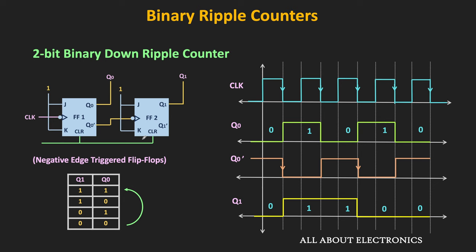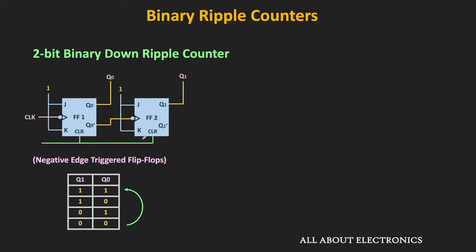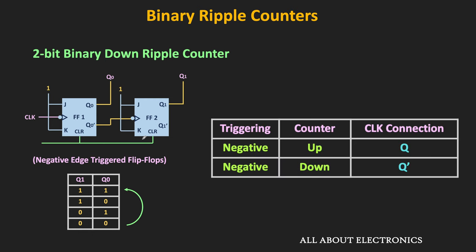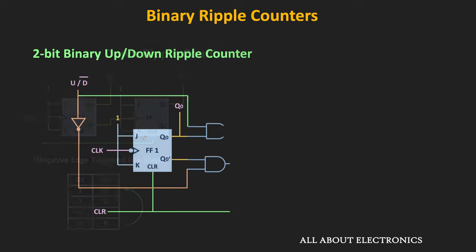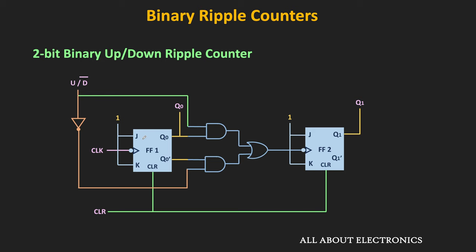Both up and down counters were designed with negative-edge-triggered flip-flops. In the up counter, the Q output is connected to the clock input, while in the down counter the Q' output is connected to the clock input. By adding a 2-to-1 multiplexer between the two flip-flops, we can use the counter as either an up counter or a down counter.